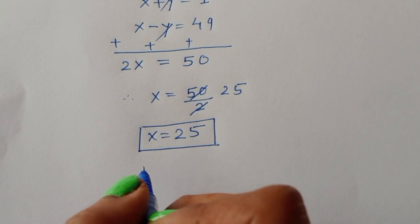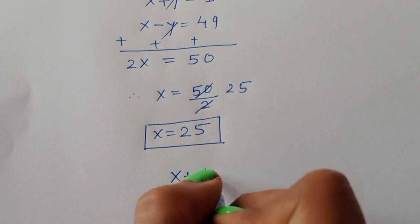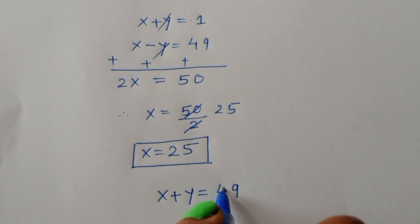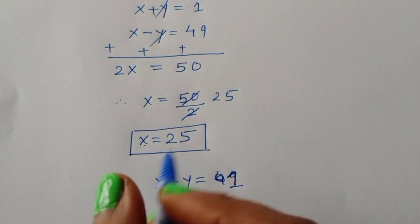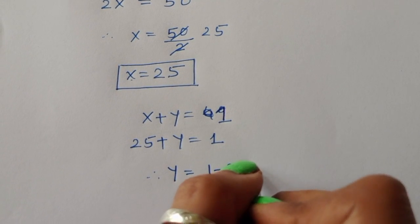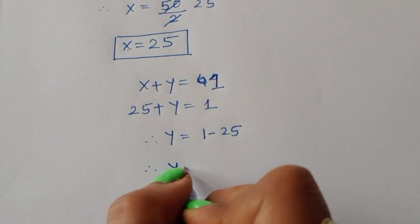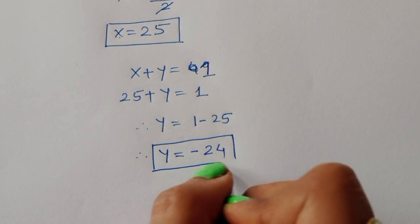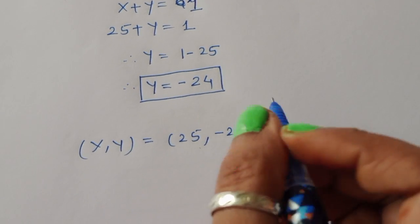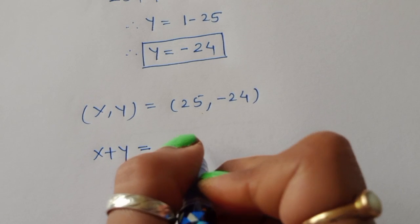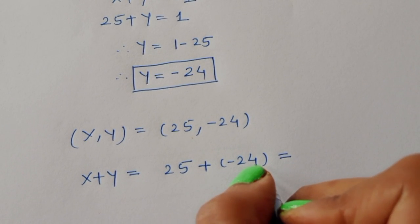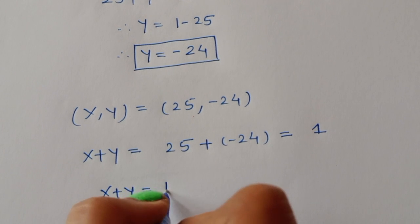Now finding y in Case 2: using x + y = 1 and substituting x = 25, we get 25 + y = 1, therefore y = 1 - 25 = -24. So x = 25 and y = -24, and x + y = 25 + (-24) = 25 - 24 = 1. The value of x + y from Case 2 is 1.